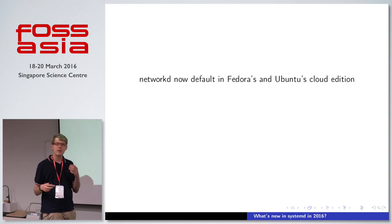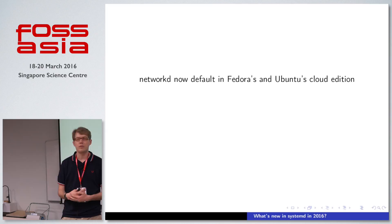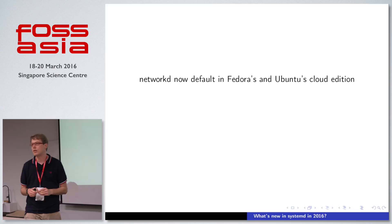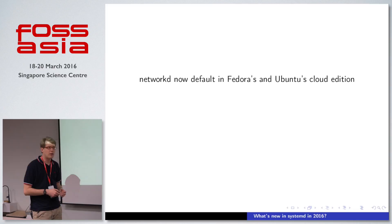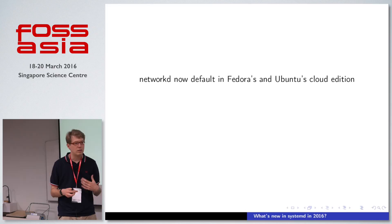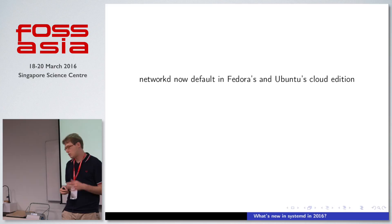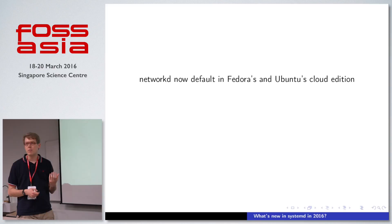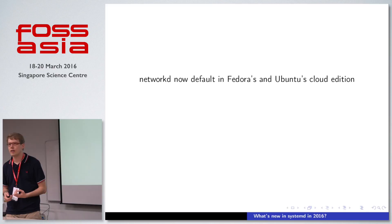We always define systemd as this basic building block — this basic set of tools that you can build an operating system or distribution from. One of the more recently added components of systemd is networkd, a network configuration system. There are many of those already around, but networkd is a much nicer one because it's very generic and capable of applying configuration you write once to many interfaces. In many ways it does what Network Manager does in most Linux distributions, but in a way we think is actually nicer and generally more compatible with what administrators and users want to do.